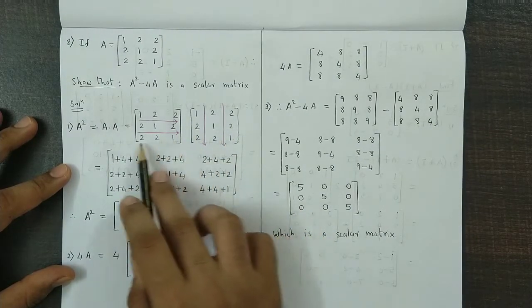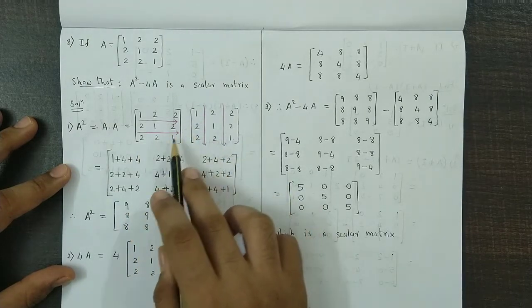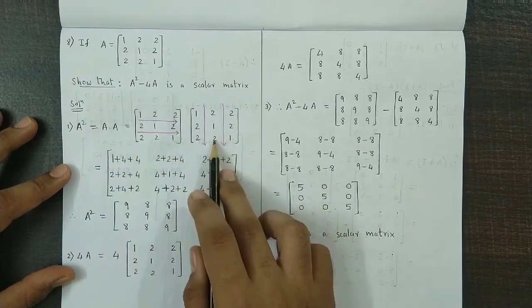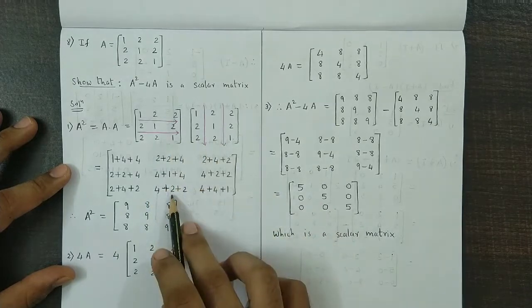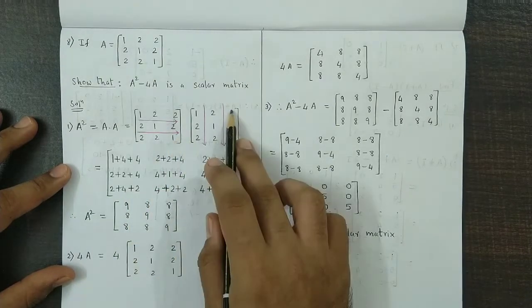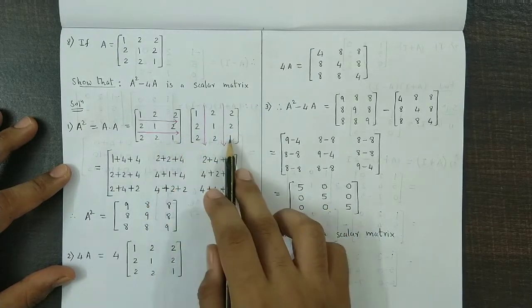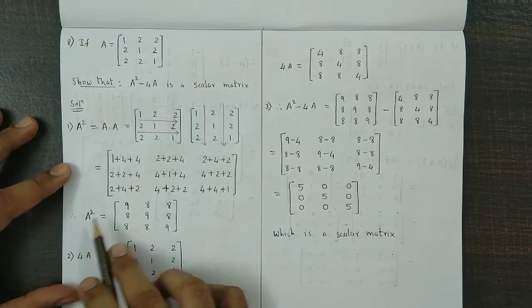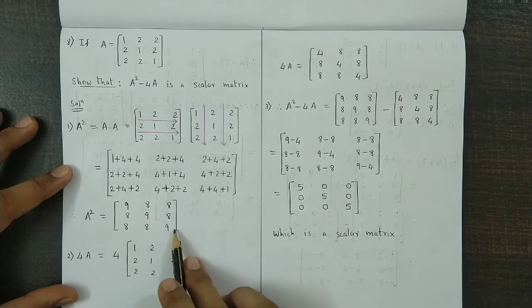Next R3. R3 C1 will be 2 plus 2 plus 2. R3 C2 will be 4 plus 2 plus 2, and R3 C3 will be 4 plus 4 plus 1. So we add up all these values and we get A square as 9, 8, 8, 8, 9, 8, 8, 8, 9.